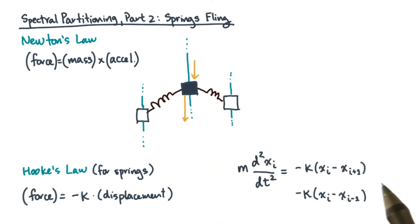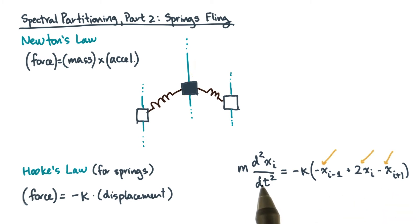So the right-hand side is just the sum of these forces. Now rewriting the right-hand side, you'll get the following. Notice the values of the coefficients. So the net force acting on a given mass is proportional to the displacements of its neighbors.